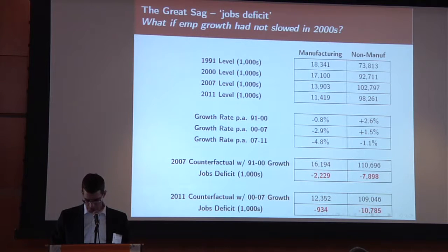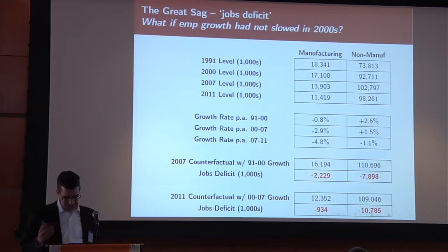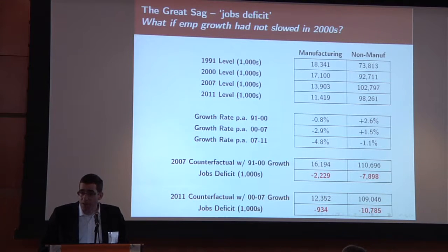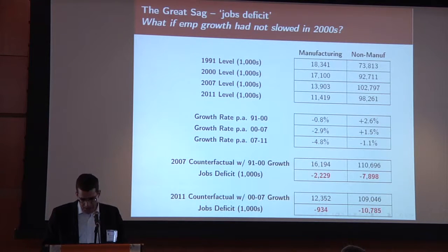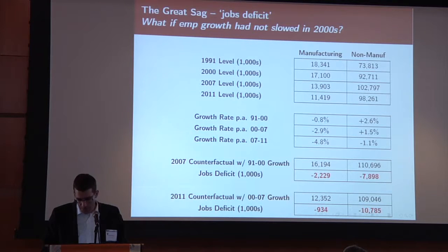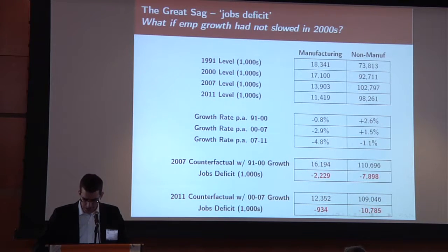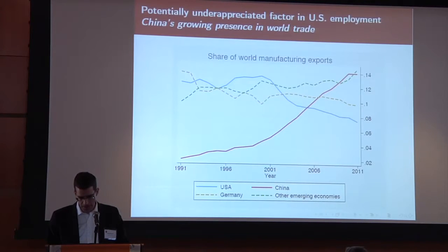Here is a compilation of numbers putting some values to these things. If we extrapolate the counterfactual scenario where the growth of the 1990s persists through the 2000s, then by the start of the Great Recession we would have had 2 million additional jobs in manufacturing still, and even more additional jobs outside of manufacturing.